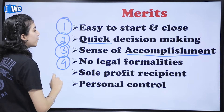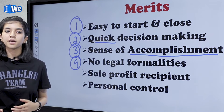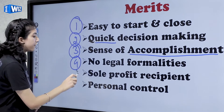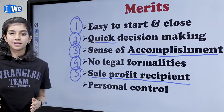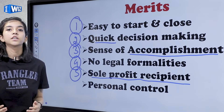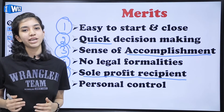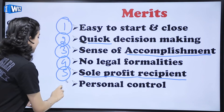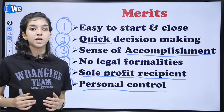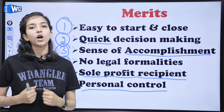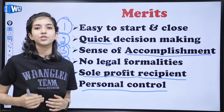The fourth merit is no legal formalities — because there are no legal formalities, it is easy to start and close. The fifth is sole profit recipient — since one person does everything, all profits go to him alone, and he does not need to share his earnings with anyone. The sixth and last merit is personal contact — when a person runs their own business, there is a sense of personal contact and a personal grip, which is very prominent in sole proprietorship.